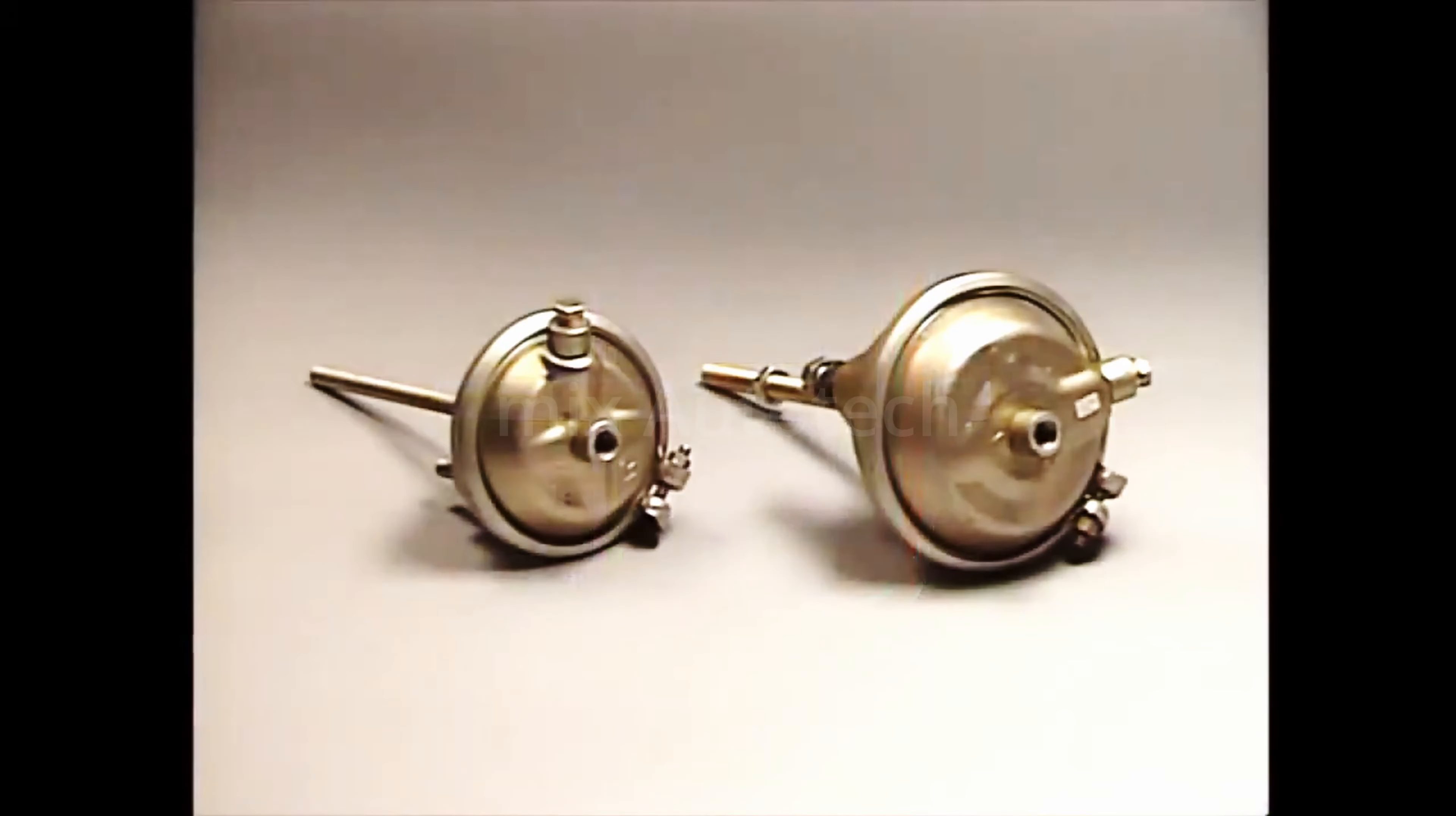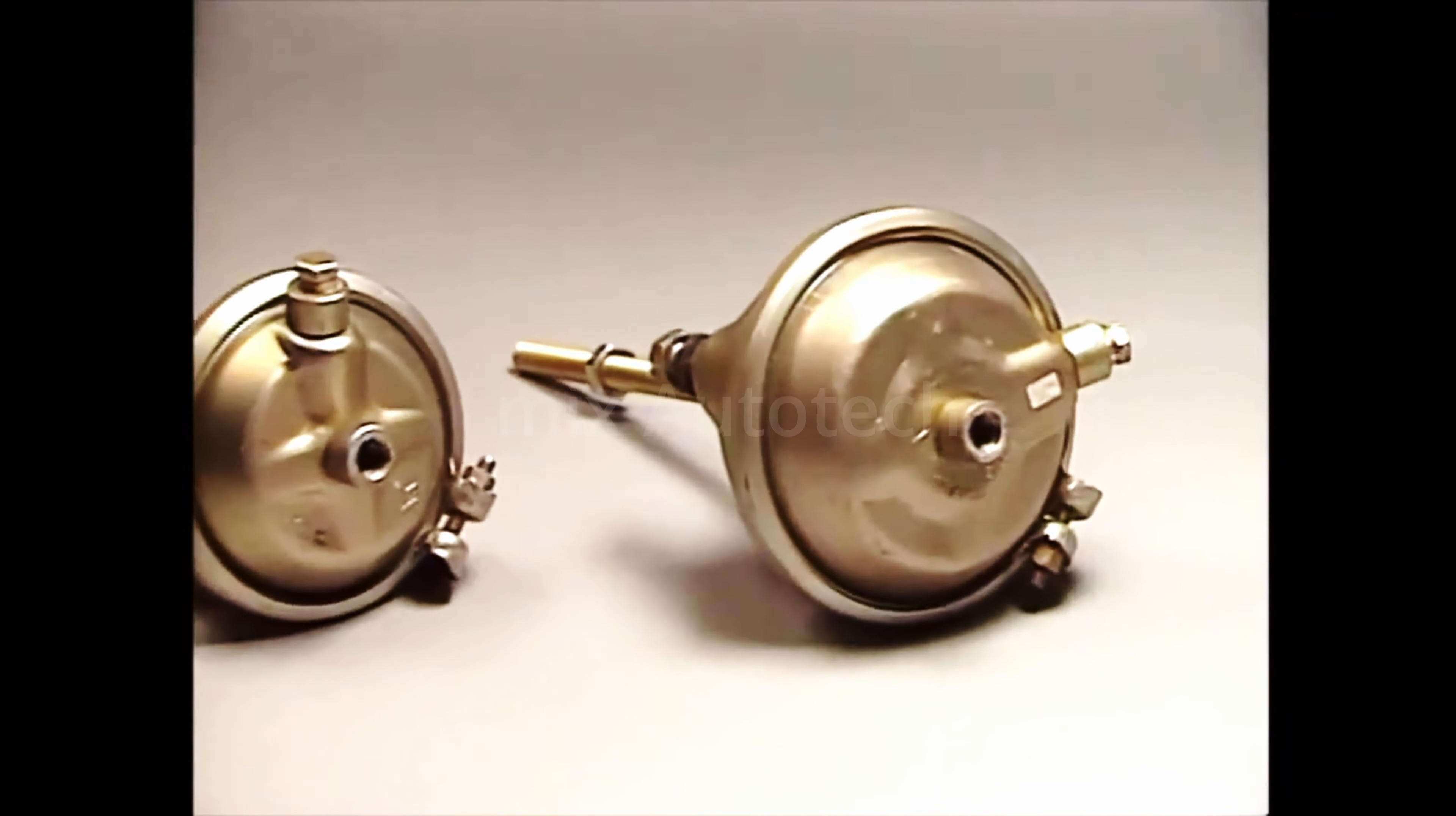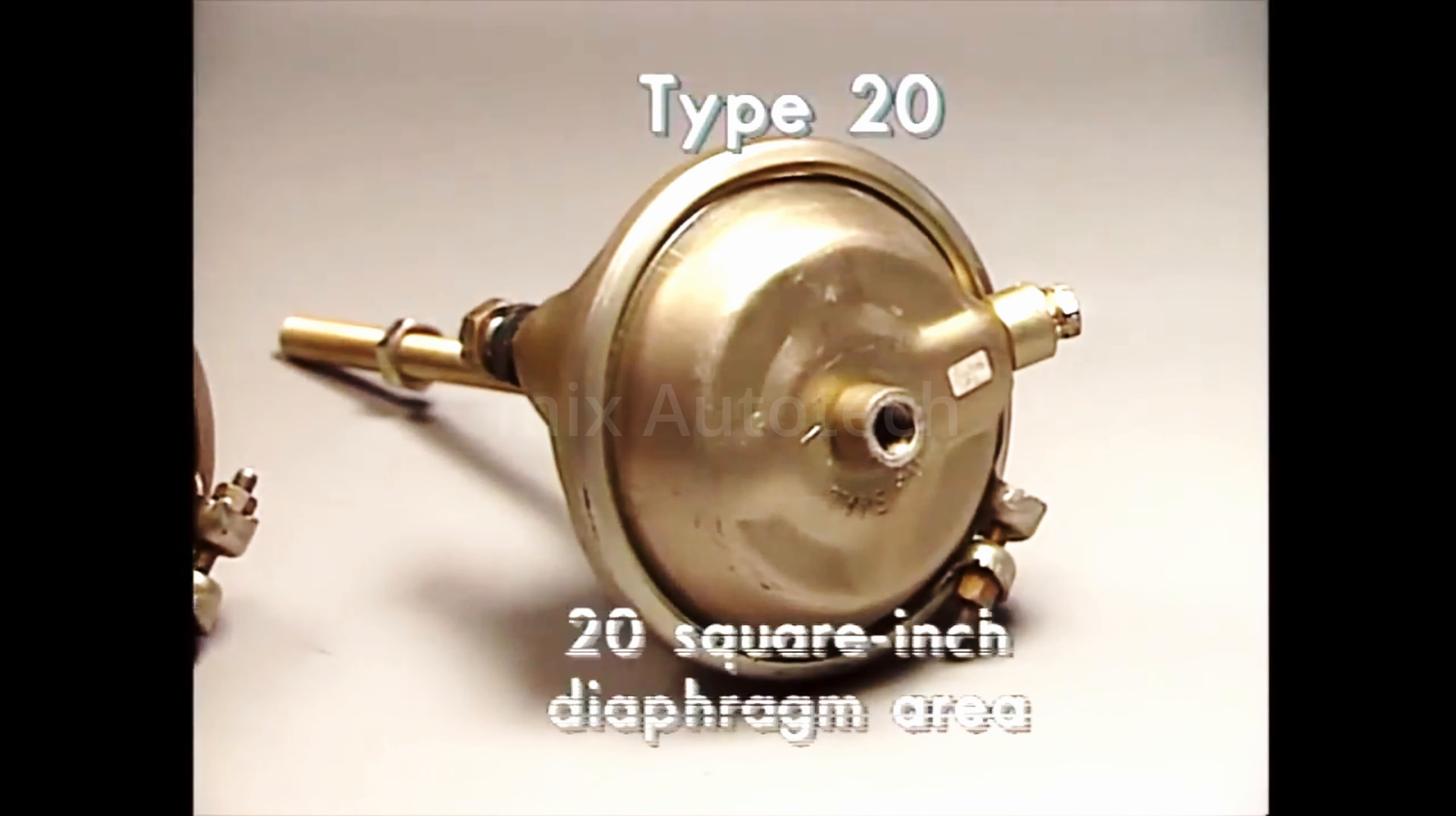There are many sizes of brake chambers. Each develops a different mechanical force. A service brake chamber size and relative power output is specified by a number representing the square inch area of its diaphragm. This chamber is a type 20. Its diaphragm has a 20 square inch area for air pressure to act on.